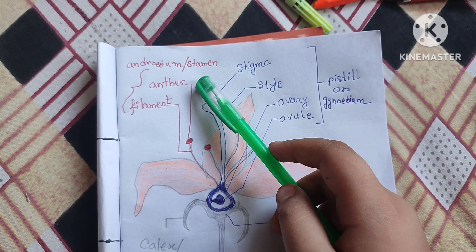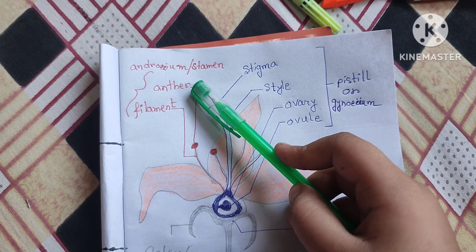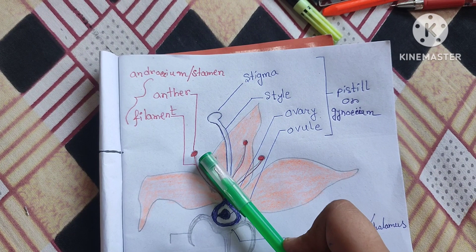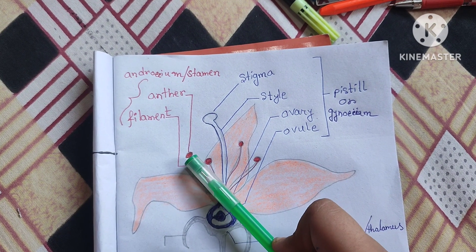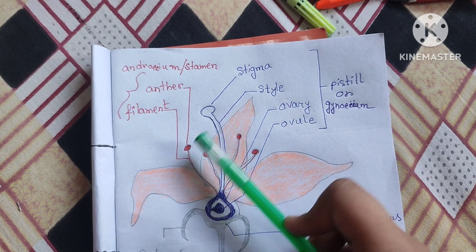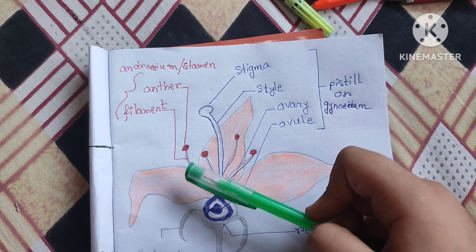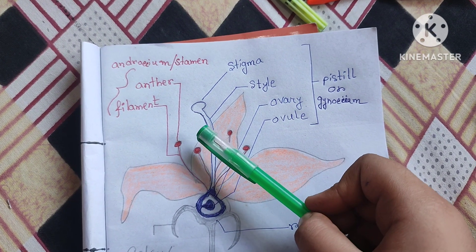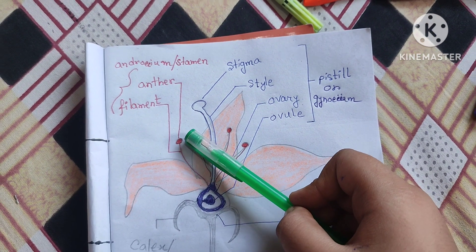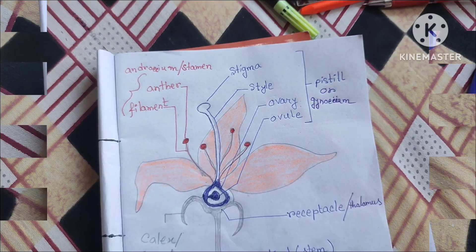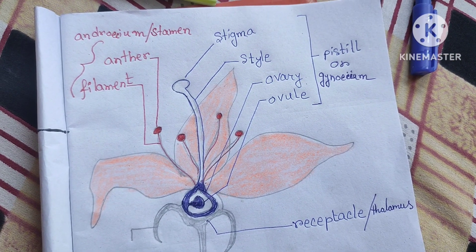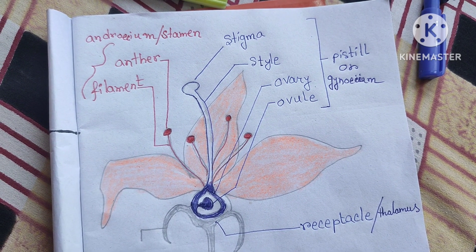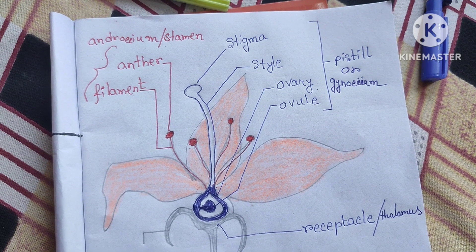Androecium or Stamen contains two parts. Anther is also known as pollen grains. Filament is the long stalk on which the anther is attached. You look at the picture and then I will explain it with an original flower.